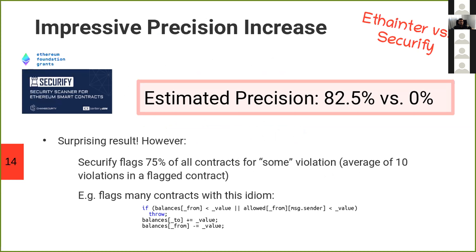We also compared eTainter across a number of tools. For instance, we took the Securify tool, which is held in high regard by the Ethereum community and is a very similar bytecode analysis tool targeting similar vulnerabilities. We got much higher precision than Securify, which was surprising at first — but Securify does flag a lot of smart contracts, indicating that many of those warnings are false positives. Securify also flagged a number of ERC smart contracts for vulnerabilities which shouldn't be applicable.